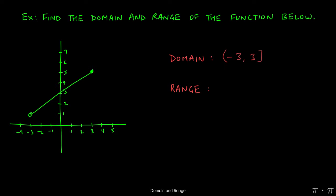On the other side, the solid dot indicates that positive 3 is included in the domain. So the domain is negative 3 excluded to positive 3 included. Inclusion is indicated by square brackets and exclusion is indicated by parentheses.